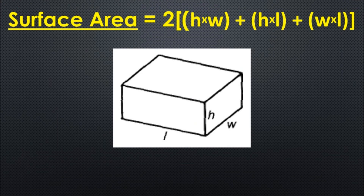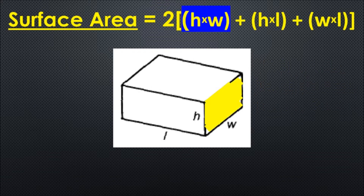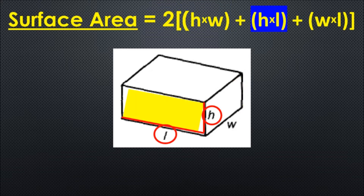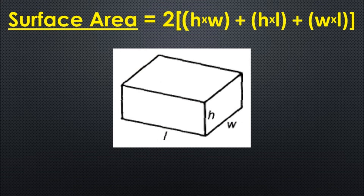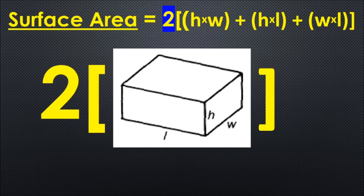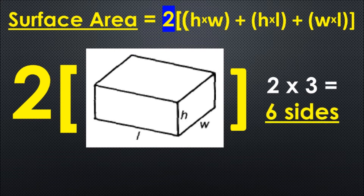With surface area, we are just going to measure the outside of the object. We begin by measuring the height and width of this side. Next we measure the height and length of this side. Now we measure the width and the length of this side. That gives us three sides, and we multiply by two to get the other three sides, for a total of six sides.